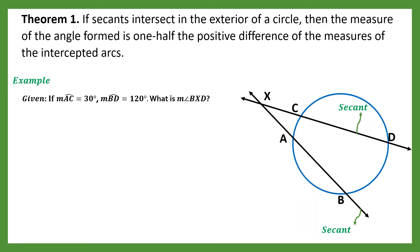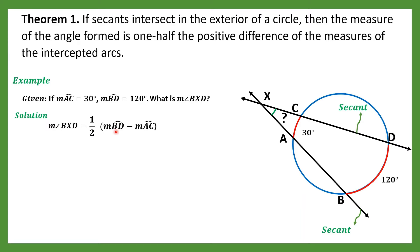Let's have an example. Given: if the measurement of arc BD is 120 degrees and the measurement of arc AC is 30 degrees, what is the measurement of angle BXD? Using the theorem stated, we can form a formula: the measurement of angle BXD is equal to one half of the measurement of arc BD minus the measurement of arc AC.